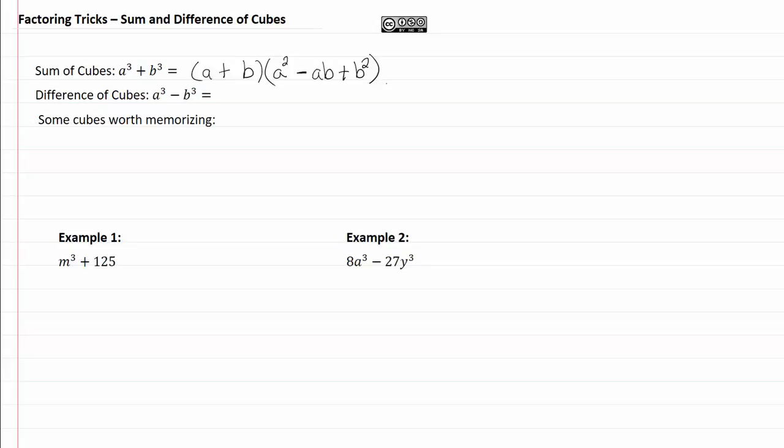One thing that you might find helpful for those of you that like acronyms is we have an acronym called SOAP, and it's basically talking about our signs and our factors. S stands for same, O is opposite, A is always, and P is for positive. So same, opposite, always positive.